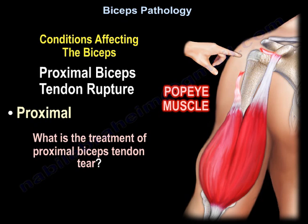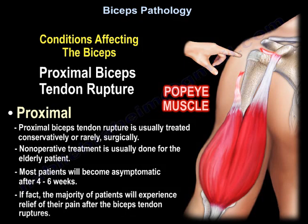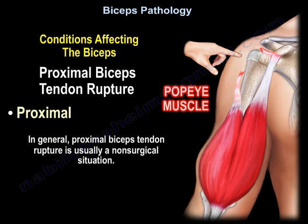Treatment of the proximal biceps tendon tear: the rupture may be treated conservatively or rarely surgically. Non-operative treatment is usually done for the elderly, and most patients will become asymptomatic after four to six weeks. In fact, the majority of patients experience relief of shoulder pain after the biceps ruptures. Surgical treatment involves reattaching the torn tendon to the bone (tenodesis), usually in association with other reconstructive surgery and rarely for cosmesis. In general, proximal biceps tendon rupture is usually a non-surgical situation.